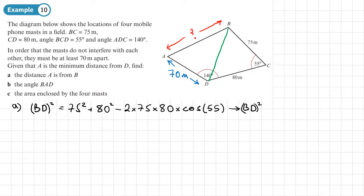So if we work that out, we'll get BD squared equal to 5142.0827 and so on. So we'll square root that to find BD and that gives us 71.7083. So I'm going to be using that exact answer for my next part.